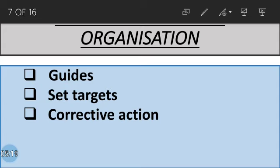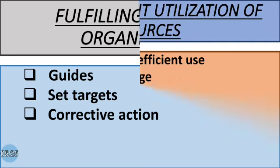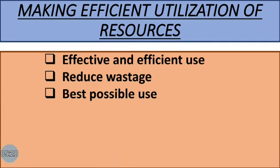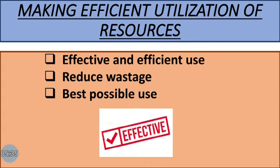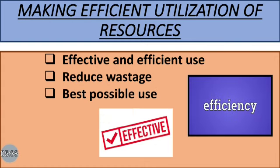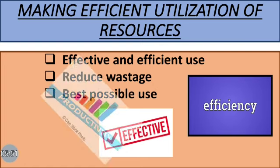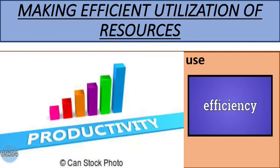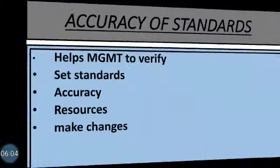Another important function of controlling is making efficient utilization of resources, where resources are used in the most effective and efficient manner. Various techniques are used to reduce wastage, and resources are put to the best possible use. Ultimately, this generates higher productivity and efficiency. Through controlling, the organization is able to make efficient utilization of resources.